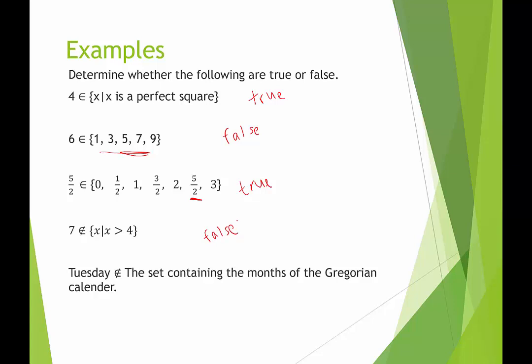And lastly, we have Tuesday is not an element of the set containing the months of the Gregorian calendar. In case you're not sure what the Gregorian calendar is, that's the calendar we use here. So it's the one that contains January, February, March, April, and so on, through December. Tuesday is not an element of that, because those would just be the 12 months. So this is agreeing with us. This is saying, yeah, Tuesday is not an element. So we would say that this statement is true.